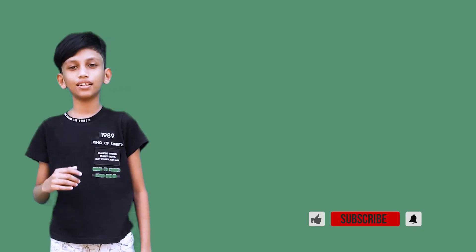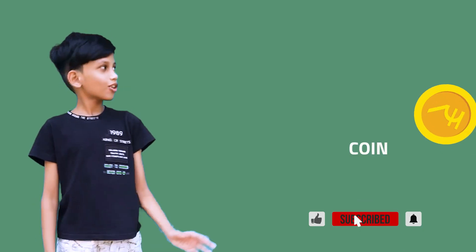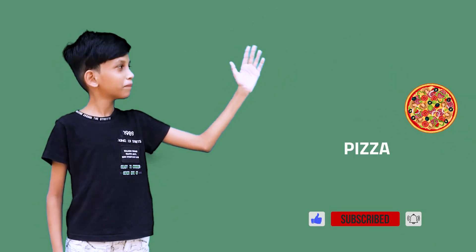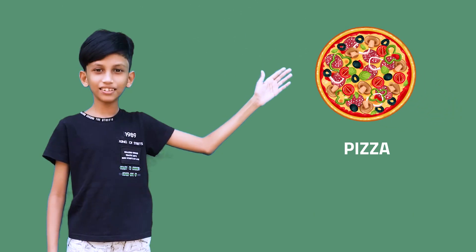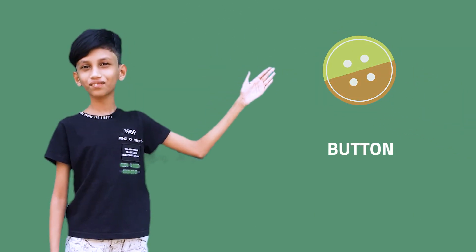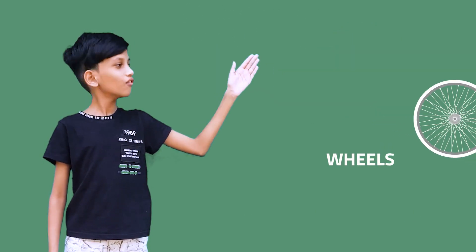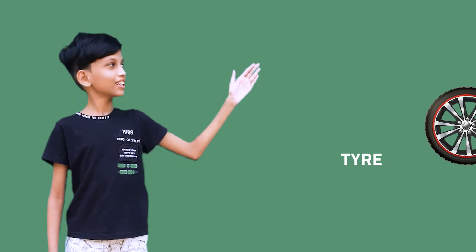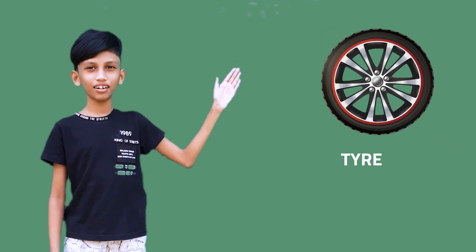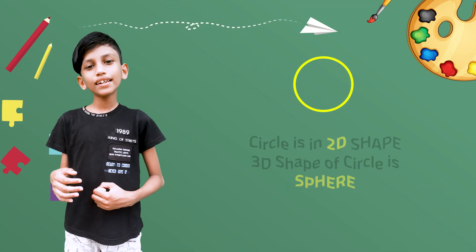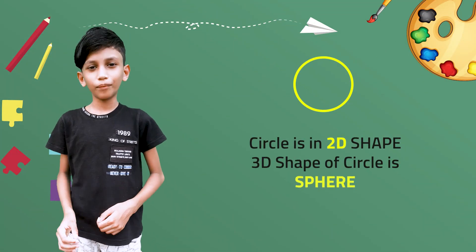So, the examples of circular objects are coins, pizza, button, wheels, tyre, etc. The circle is a 2D shape.